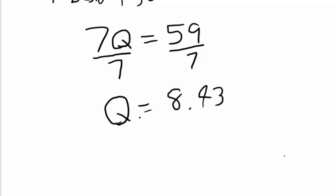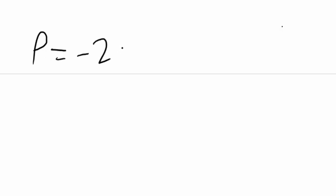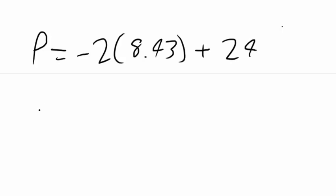So 8.43 is the quantity supplied and demanded by the market. Now that we know our quantity, we can find our price by plugging into either price function. Using the quantity demanded function: price equals negative 2 times 8.43 plus 24. That gives a final price of $7.14. So they would charge $7.14 and produce 8.43 units for the market.